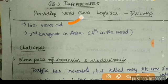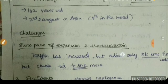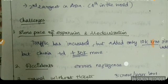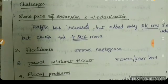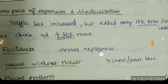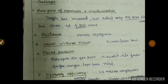The railway network supports the middle class and lower-income people. Among the challenges: first, slow pace of expansion and modernization — since Independence, India has added only 10,000 kilometers of track. Comparing with China, the gap is stark: India added only 50,000 kilometers total since Independence.